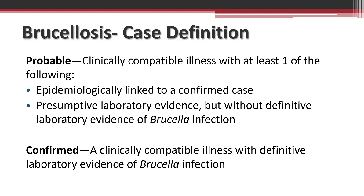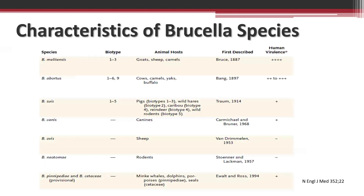Confirmed cases require a clinically compatible illness with definitive lab evidence of Brucella infection. Looking at Brucella species from a New England Journal of Medicine table, those that infect humans are primarily Brucella melitensis and Brucella abortus, with others present but less common. The animal host for melitensis includes goats, sheep, and camels.